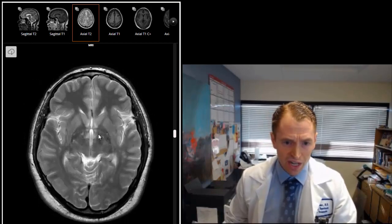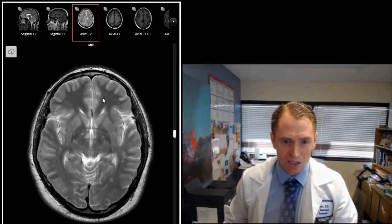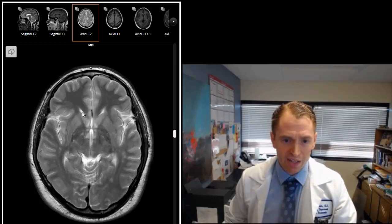On the T2 scan the white matter appears dark and the cortex or the surface of the brain with the cells appears bright. You can see the deep gray nuclei, the caudate and the putamen here for instance.